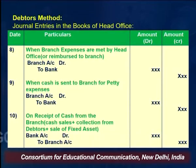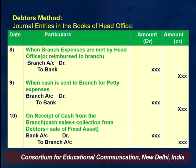When branch expenses are met by the head office or reimbursed to the branch, the entry is: Branch Account debit to Bank Account — because the cash balance of the head office is affected. When cash is sent to the branch for petty expenses, the entry also remains: Branch Account debit to Bank Account. In both cases — whether expenses are paid directly or cash is sent for petty expenses — the entry is Branch Account debit to Bank Account.